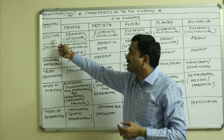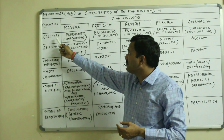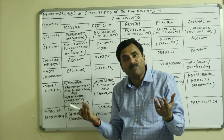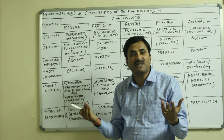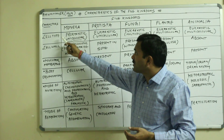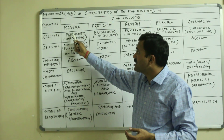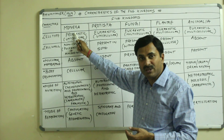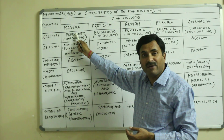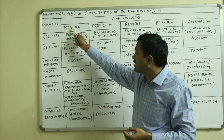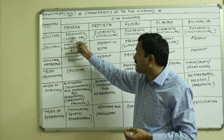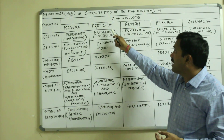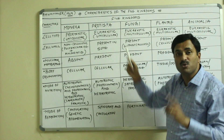The first character is the cell type — what type of cell is found in all these five kingdoms. As we know, there are two types of cells: prokaryotic cell and eukaryotic cell. The cell type of the Monerans is prokaryotic, meaning they have a primitive nucleus or incipient nucleus, and the nucleus is not bounded by a well-defined nuclear membrane.